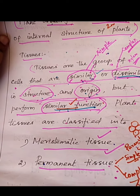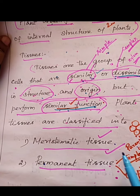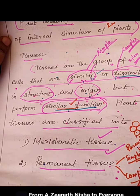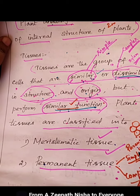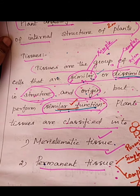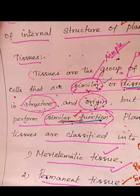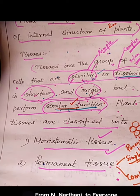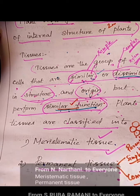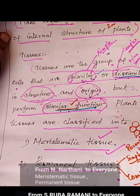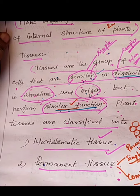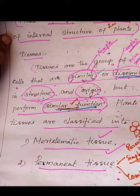The plant tissues are classified into two major types: meristematic tissue and permanent tissue. Meristematic tissues are of three types: apical meristem, intercalary meristem, and lateral meristem.